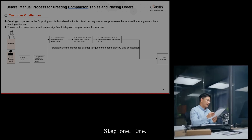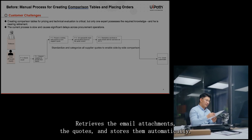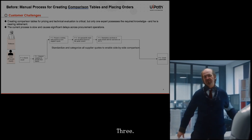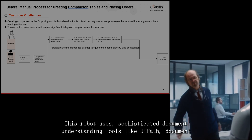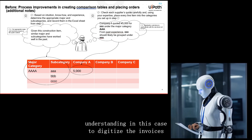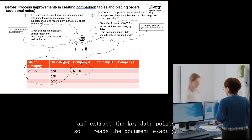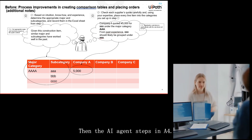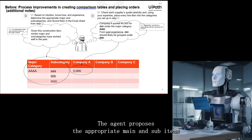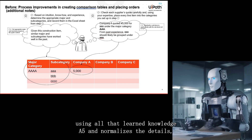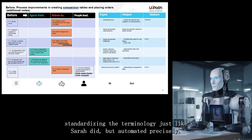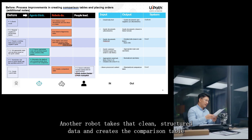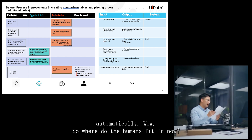Step one: a robot retrieves the email attachments and stores them automatically. Another robot gets triggered, and a third uses sophisticated document understanding tools — like UiPath Document Understanding — to digitize the invoices and extract key data points. Then the AI agent steps in: it proposes the appropriate main and sub items using all that learned knowledge, normalizes and standardizes the terminology. Finally, another robot takes that clean structured data and creates the comparison table automatically.